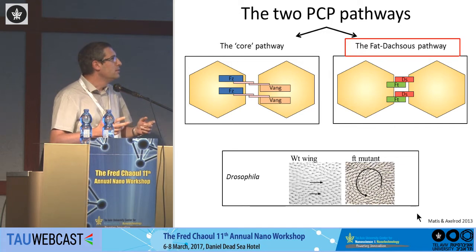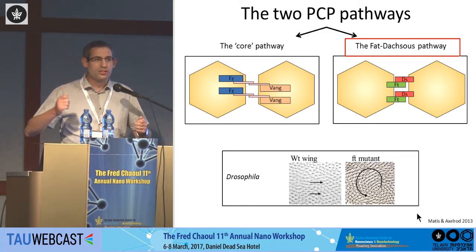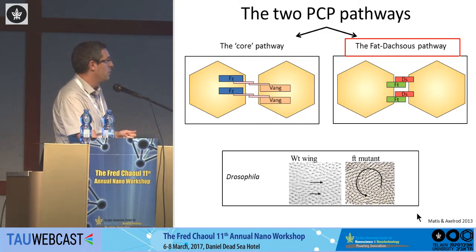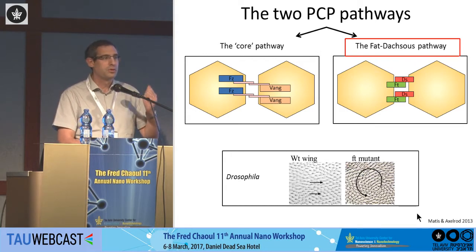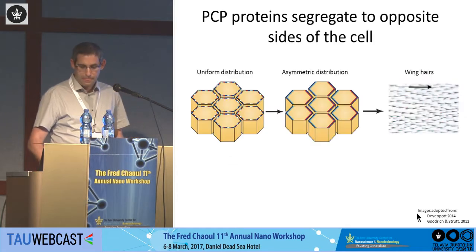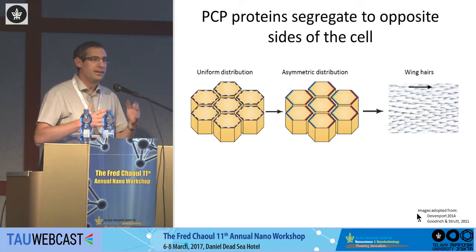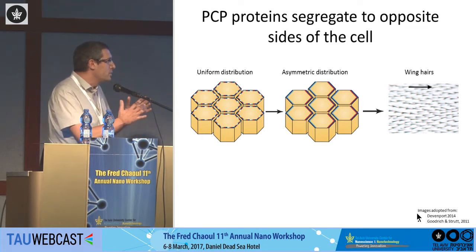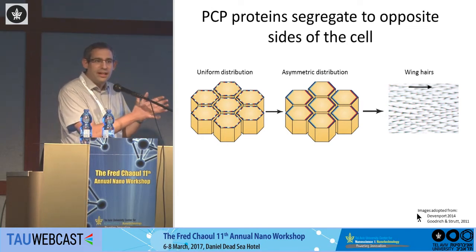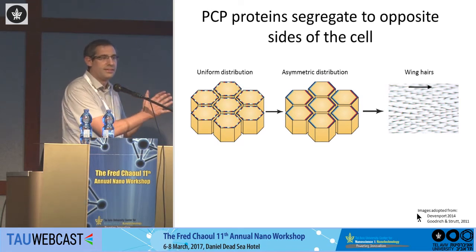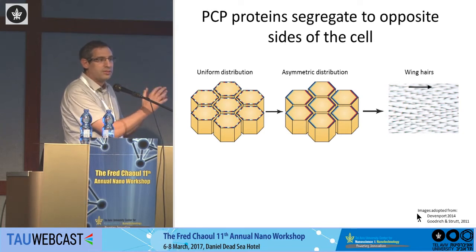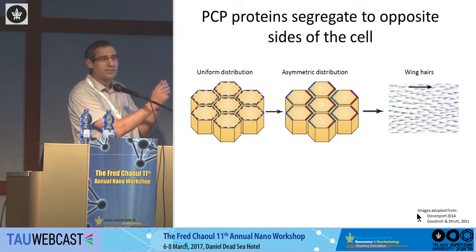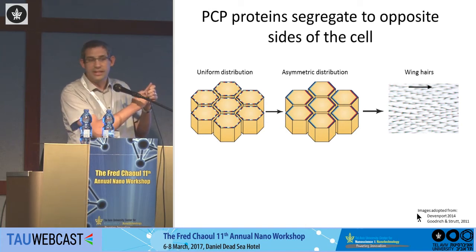If you do a mutation in the fat gene in Drosophila, instead of getting an organized pattern of hairs, you get a disordered pattern. We also know that if you look at tissues going through planar cell polarity, these two proteins — Fat and Daxos — tend to segregate into opposite sides of the cell on the apical side. Fat goes to one side, Daxos goes to the other side, and in the next cell it's Daxos-Fat, then Daxos-Fat, and so on. This is how polarity is coordinated between cells.